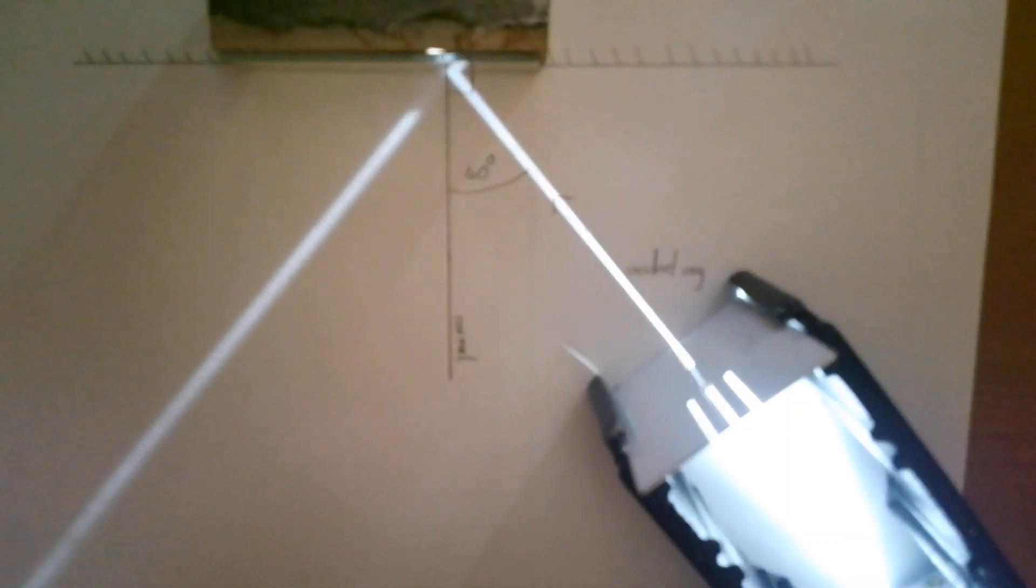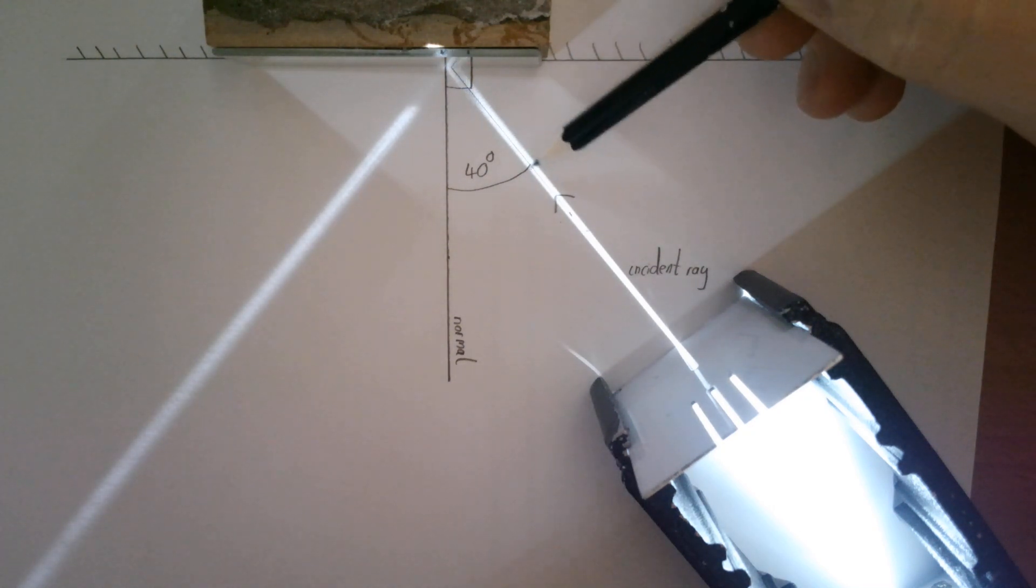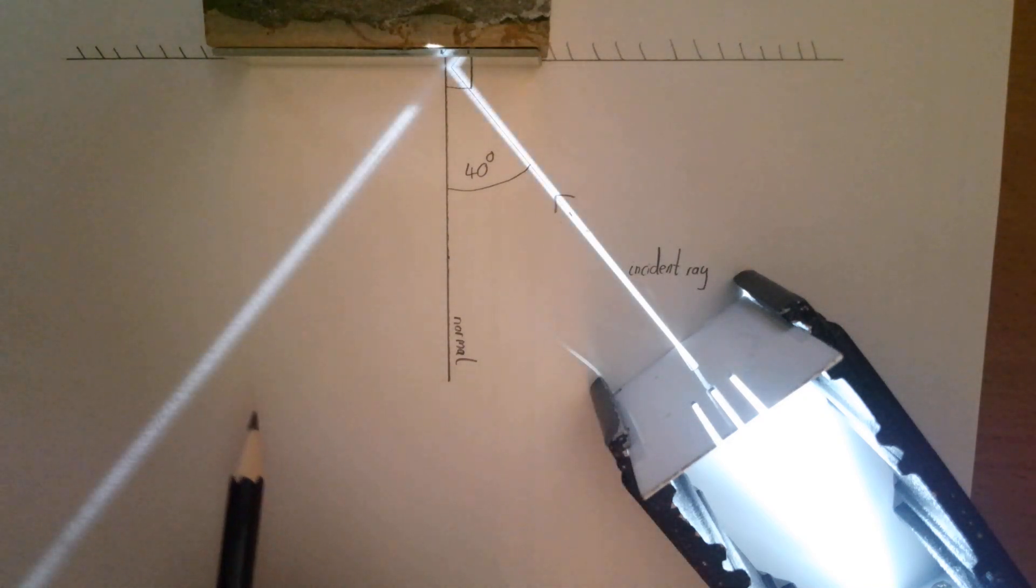The camera is just struggling to see that, hopefully that helps. But you can see that the ray I've drawn on paper is going right down the middle of the real light ray coming from the ray box.